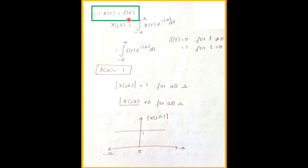First, x(t) = δ(t), the unit impulse function. We know δ(t) = 1 at t = 0 and δ(t) = 0 for t ≠ 0. Applying the Fourier transform: X(jω) = integral of δ(t) e^(−jωt) dt. Since δ(t) is nonzero only at t = 0, we substitute t = 0: δ(0) · e^0 = 1 · 1 = 1. Therefore, X(jω) = 1.